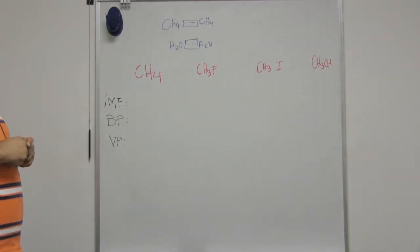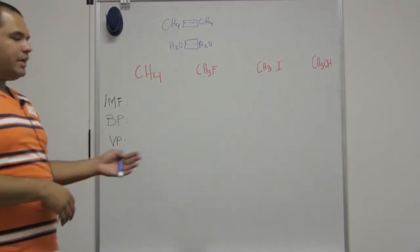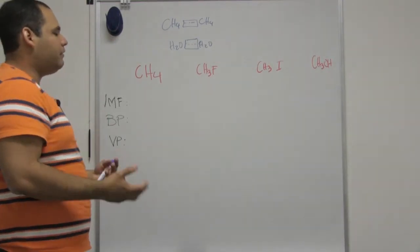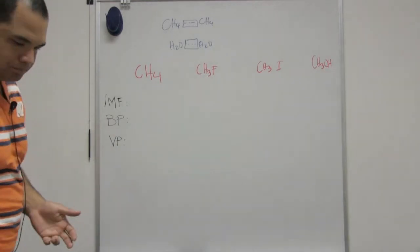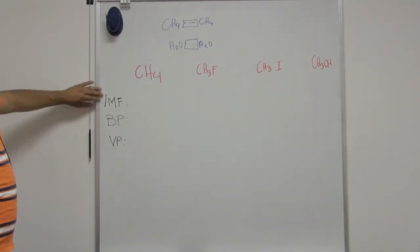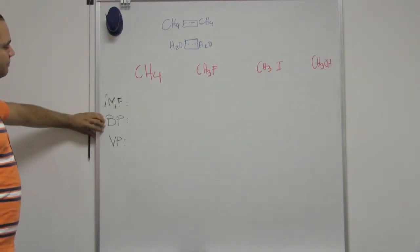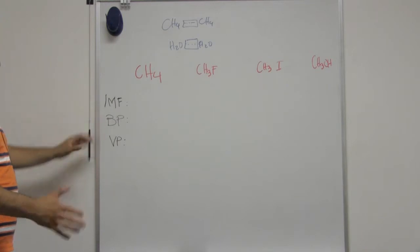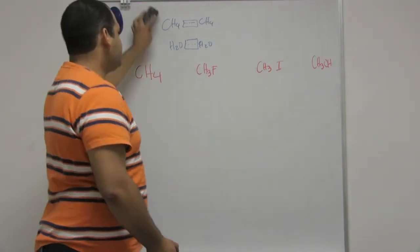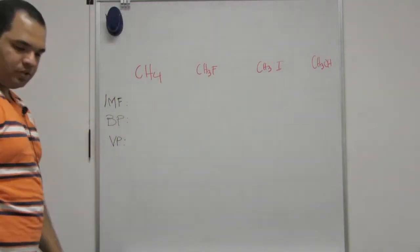Vaporization is when I have a liquid becoming a gas, and condensation is the opposite, the gas becoming a liquid. Now, in order to figure out this part, we need to know what kind of intermolecular forces do I have and what is the boiling point. Let's assign intermolecular forces.